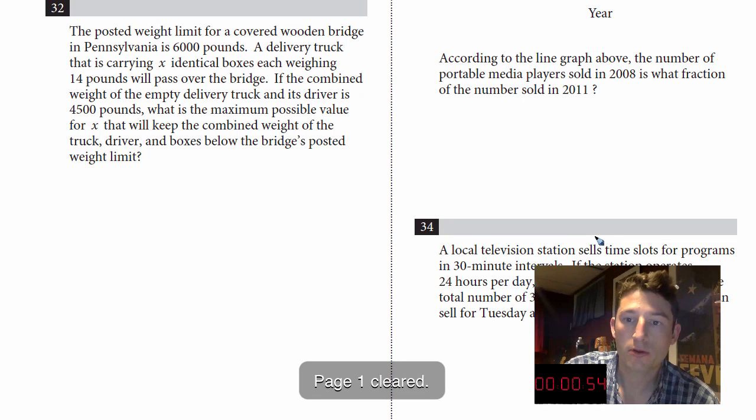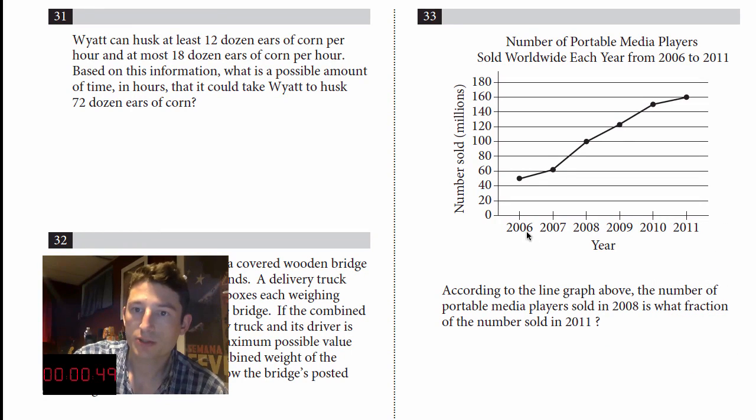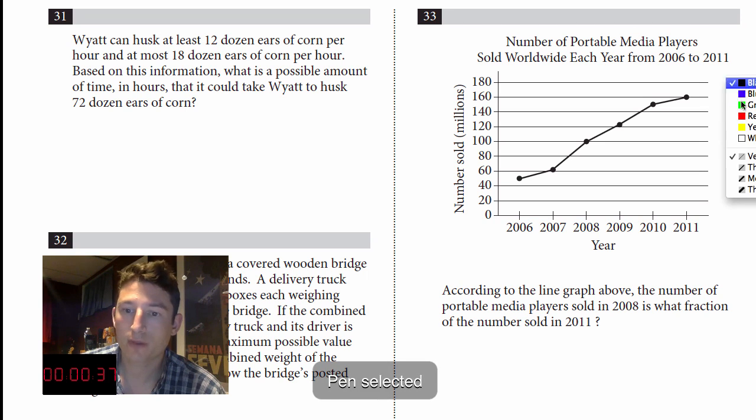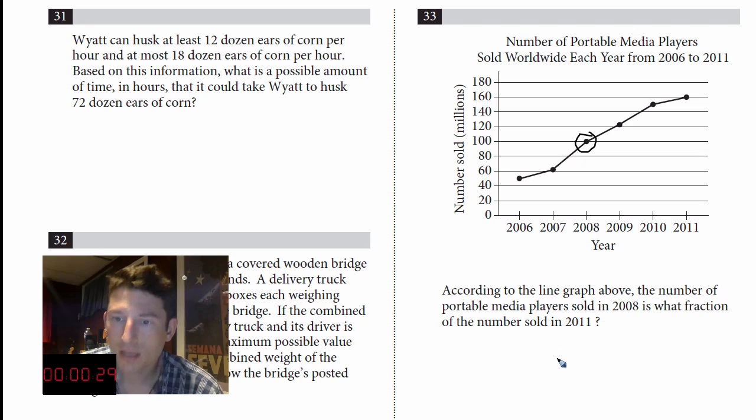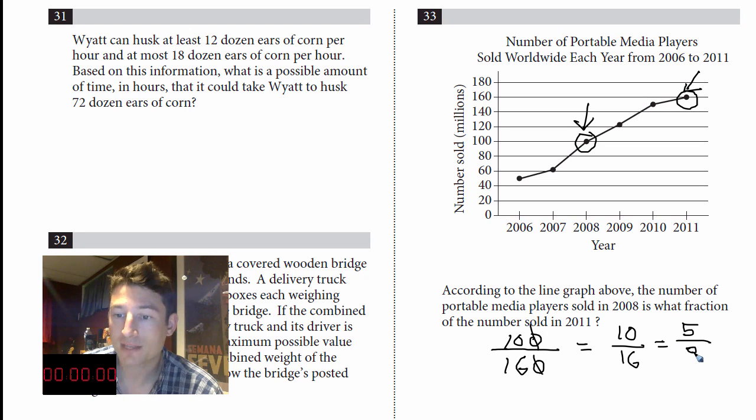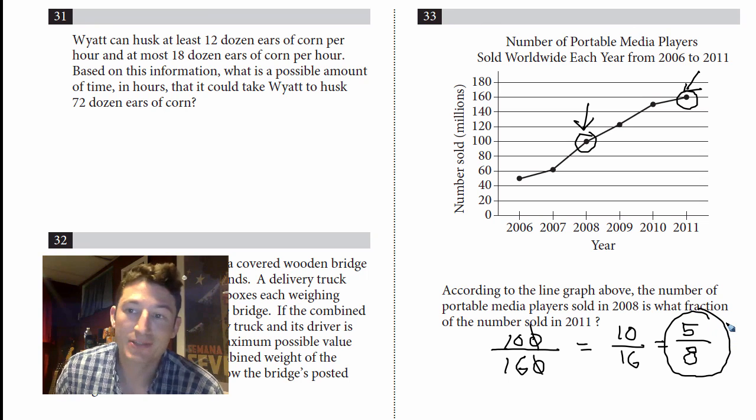Okay. Number 33. Let's see here. So this one says the number of portable media players sold worldwide each year from 2006 to 2011. And it's the number sold in millions when I look at the side of the graph over here. So what is our question? According to the line graph above, the number of portable media players sold in 2008, which is a hundred million, is what fraction of the number sold in 2011? So when they ask you that, it's this amount divided by this amount. So we got 100, I'm just going to do it as hundreds. 100 divided by 160. This seems like a really easy problem. So 10 over 16, right? So you can grid in 10 over 16. You could probably even write five over eight. That's probably the best way you could put this five eighths and you're done. That's really pretty much it.